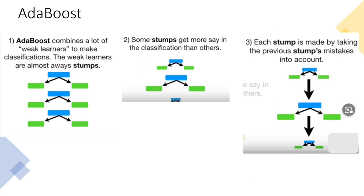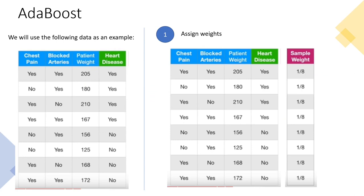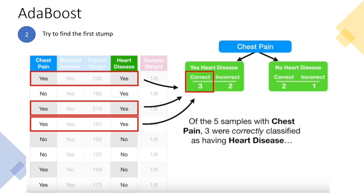Now a worked example constructing AdaBoost manually. We have three independent variables: chest pain, blocked arteries, and patient weight, and the target is whether the patient has heart disease. Initially we assign equal weights to all 8 rows — each gets a weight of 1/8. We then create tree stump tables using the same strategy as decision trees, using Gini index.